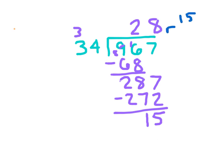If I express this as a mixed number, I'd express it as 28 and 15 34ths. That looks like a simplified fraction. I know that 34 is not divisible by 3, 5, or 15. So the only common factor those two numbers have is 1, so it's in simplest form.